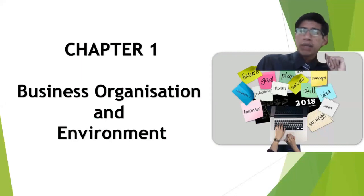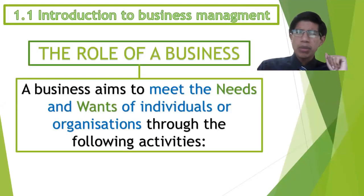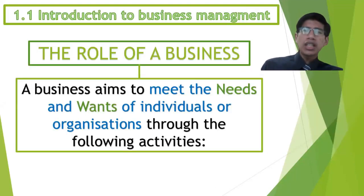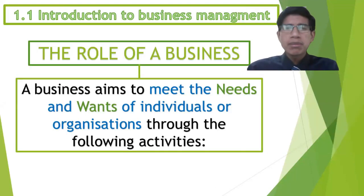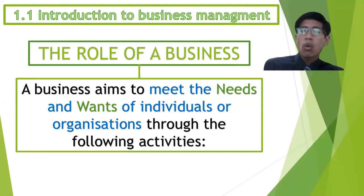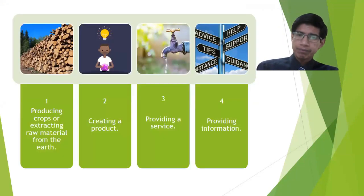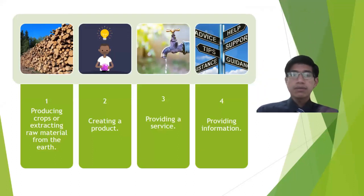Here we have Chapter 1: Business Organization and Environment. We are going to check some features about this topic. Introduction to business management — the role of a business. A business aims to meet the needs and wants of individuals or organizations through the following activities.